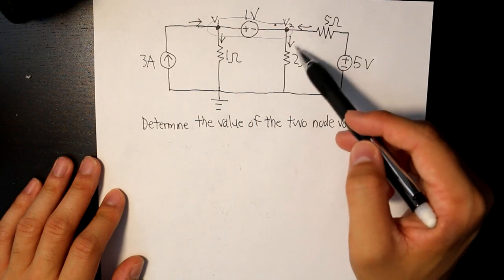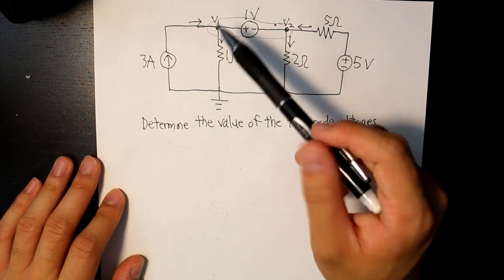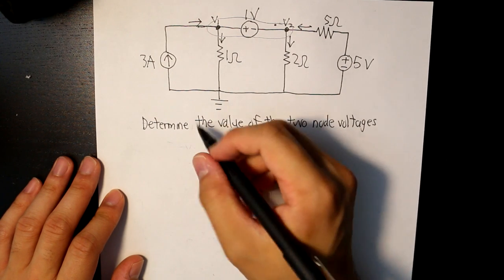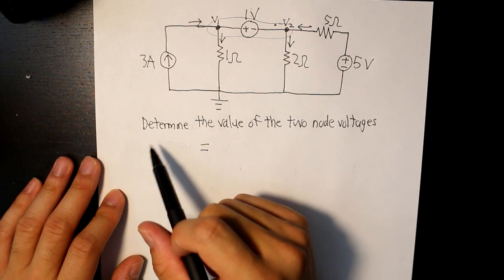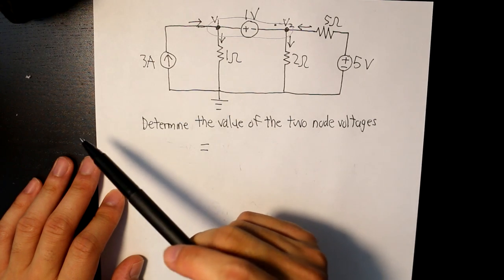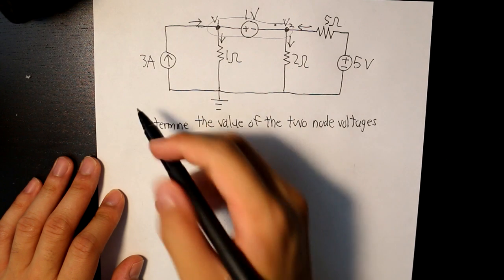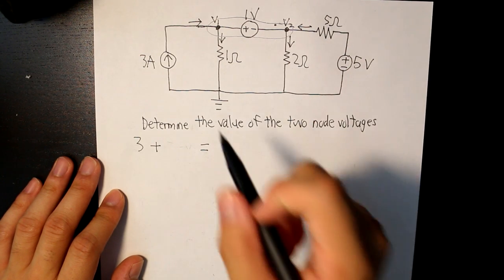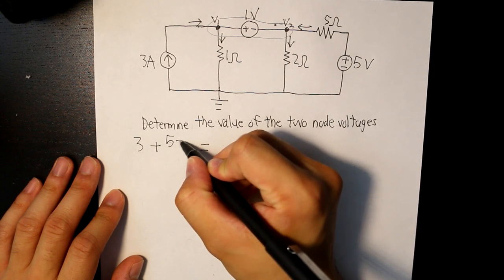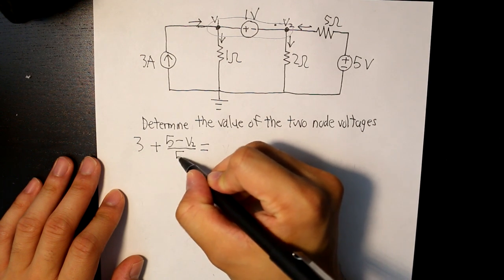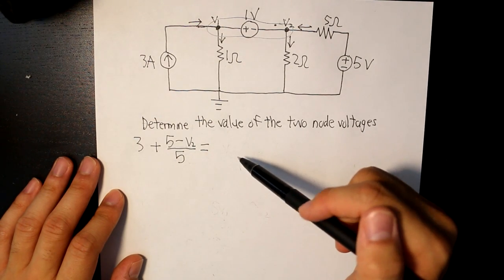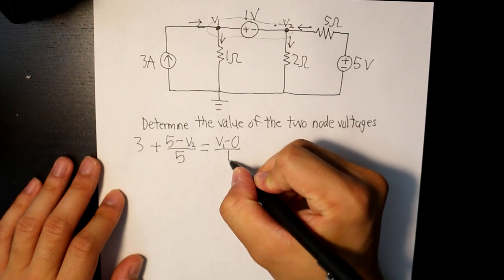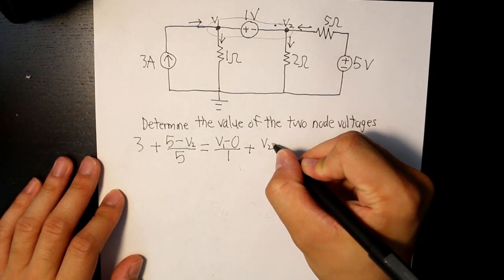And now we can apply KCL to all of the currents that are entering and exiting this supernode. So let's write down our KCL equation. So we'll just put an equal sign right here. And in our left side of our equation, let's include all of the currents that are entering this supernode. And that would be 3 amps plus 5 minus V2 divided by 5. And on our right side, let's include all the other currents that are exiting this supernode. And that would be V1 minus 0 divided by 1 plus V2 minus 0 divided by 2.